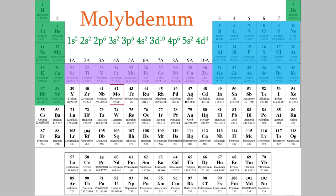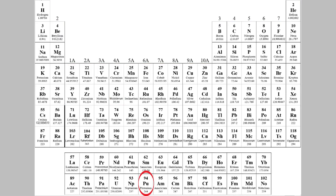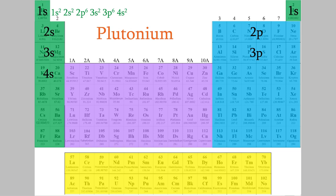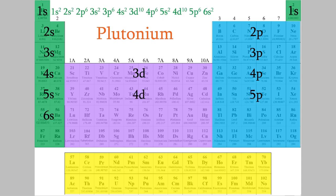For example, take plutonium. Plutonium has 94 electrons — it would take a lot of space to write out its orbital diagram. But now that we know the secret of the periodic table, it's easy to write its electron configuration: 1s², 2s², 2p⁶, 3s², 3p⁶, 4s², 3d¹⁰, 4p⁶, 5s², 4d¹⁰, 5p⁶, 6s².